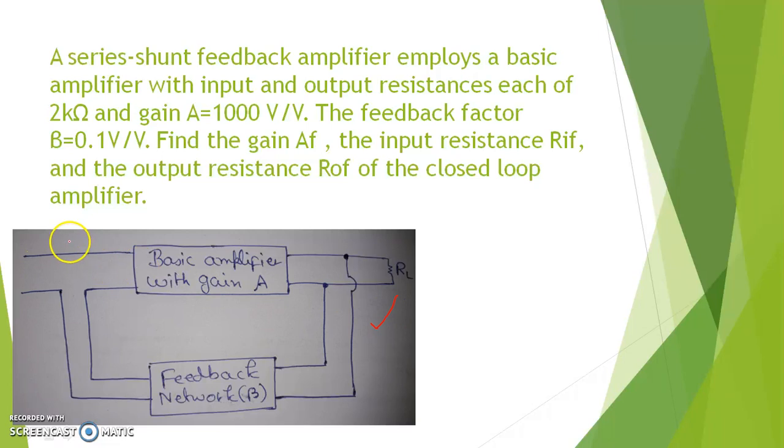Here in the input side, this is series type, mixing is series and the sampling network is basically shunt type. So, this is series shunt feedback topology. Now, we have to determine the overall gain. So, we know the formula for the overall gain of the negative feedback as AF equal to A by 1 plus A times β, or G by 1 plus GH as you say.